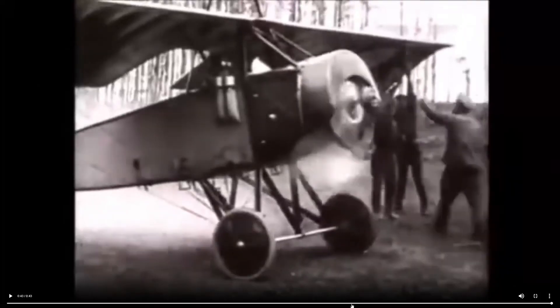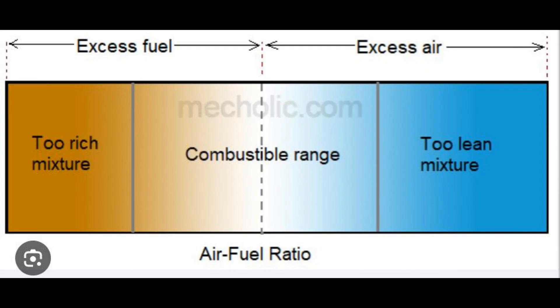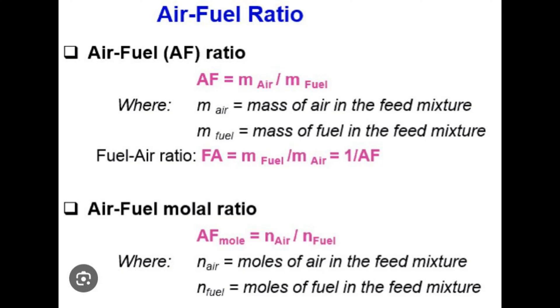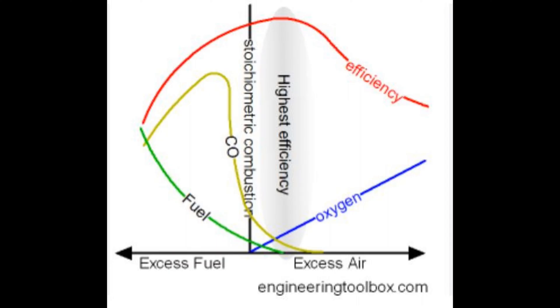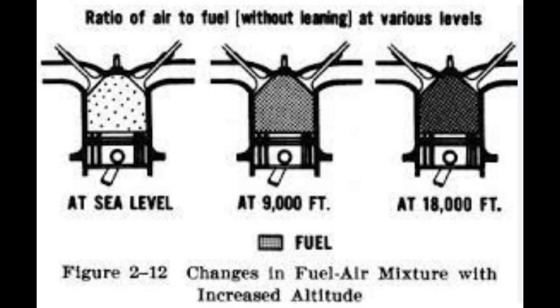We have to realize that when we set the perfect fuel-to-air ratio at sea level, as we climb, that changes. As we increase altitude, there is less oxygen for the combustion process, which means we need to adjust the mixture to reduce the amount of fuel going in to match the ideal oxygen-fuel ratio.